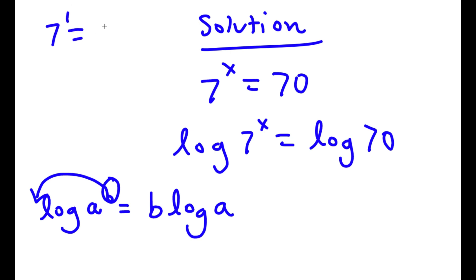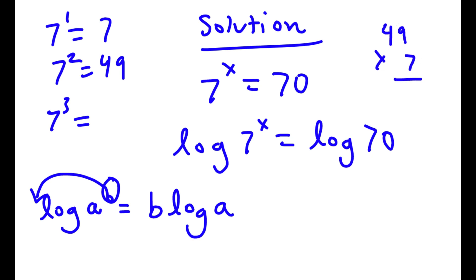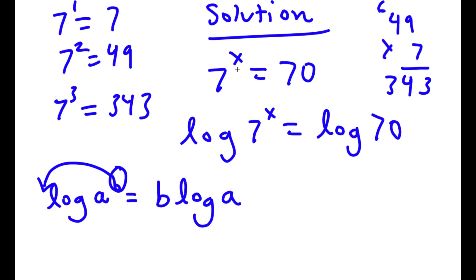For example: 7 to the power of 1 equals 7, 7 to the power of 2 equals 49, and 7 to the power of 3 equals 343. So as you can see, the value of x is going to be somewhere in between 2 and 3 because 70 is in between 49 and 343. This property is really useful because once we change x to an actual term it's going to be much simpler to solve for.